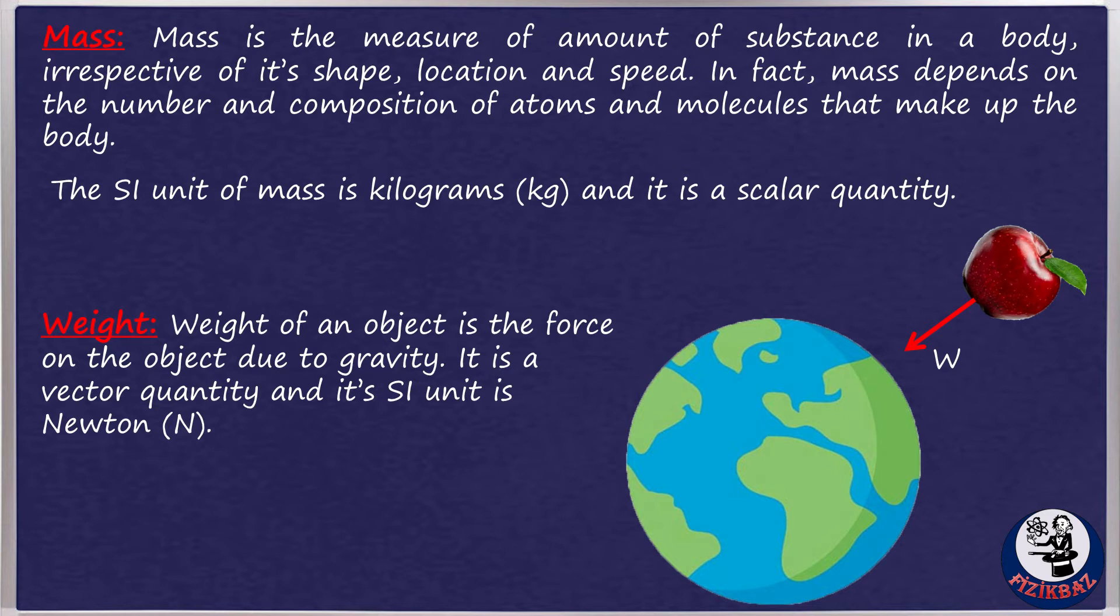So what is the difference between mass and weight? Mass is the measure of amount of substance in a body, irrespective of its shape, location, and speed. In fact, mass depends on the number and composition of atoms and molecules that make up the body. The SI unit of mass is kilograms and it is a scalar quantity.